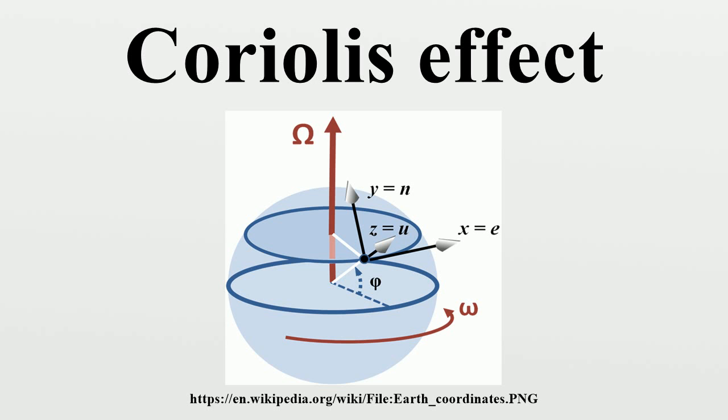In 1856, William Ferrell proposed the existence of a circulation cell in the mid-latitudes with air being deflected by the Coriolis force to create the prevailing westerly winds. Understanding the kinematics of how exactly the rotation of the Earth affects airflow was partial at first.